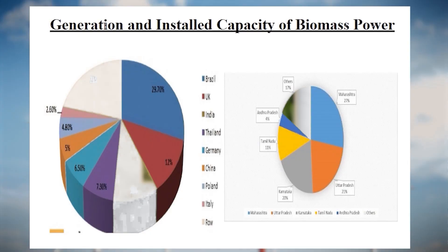Furthermore, bioenergy can often take advantage of existing infrastructure. For instance, biomethane can use existing natural gas pipelines and end-user equipment, while many drop-in liquid biofuels can use existing oil distribution networks and be used in vehicles with only minor alterations. Now, let us understand the generation and installation capacity of biomass power.